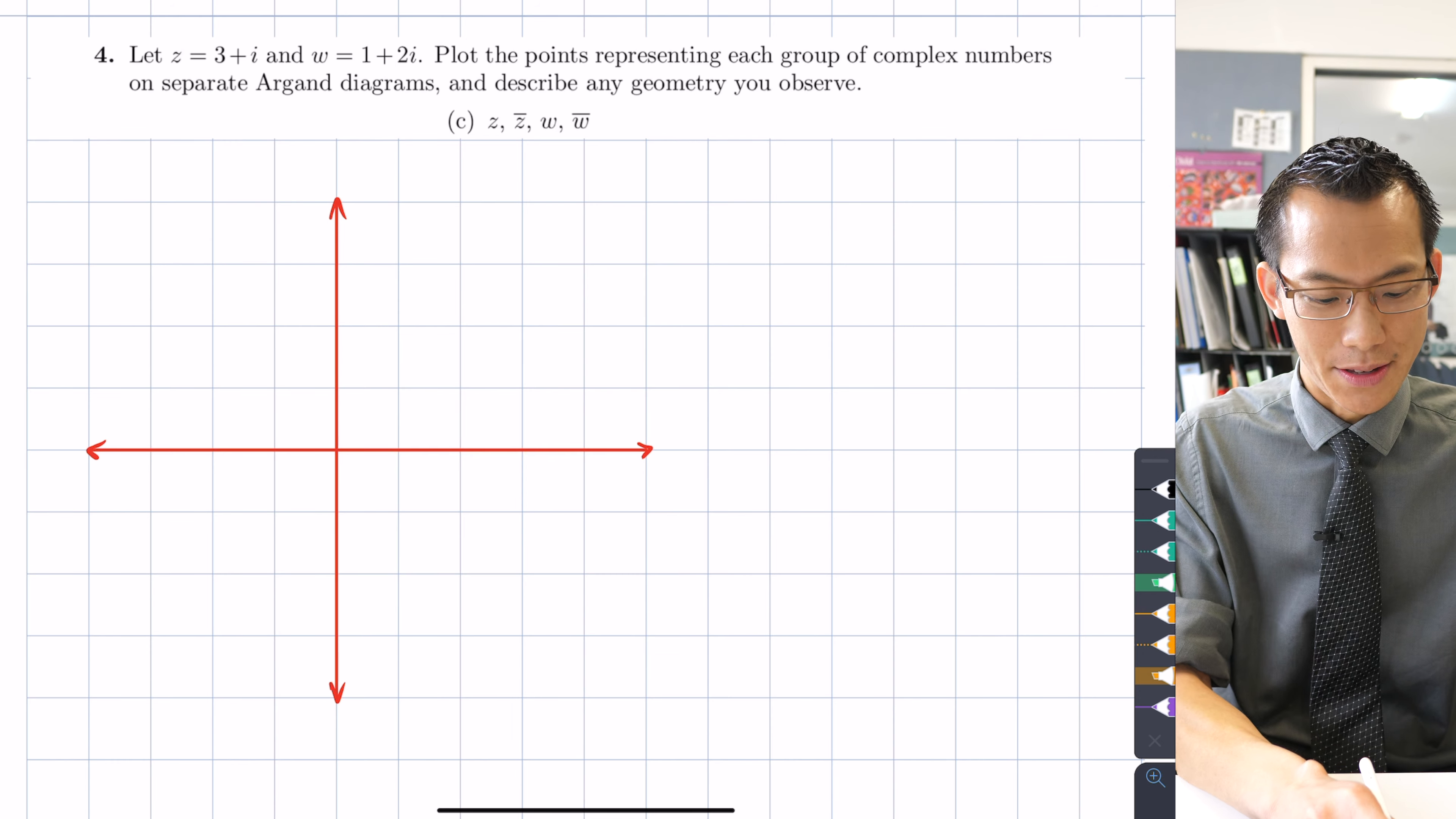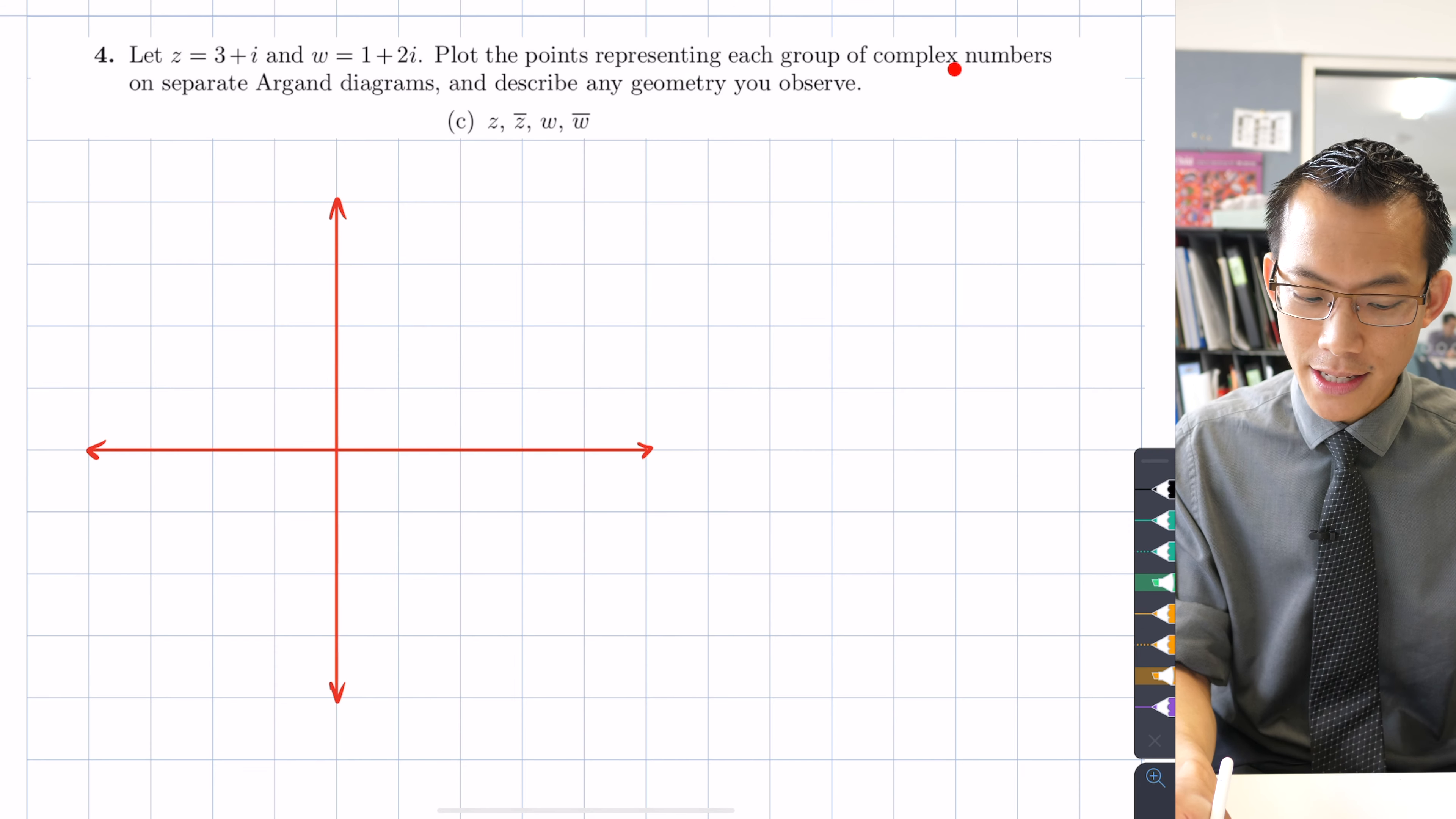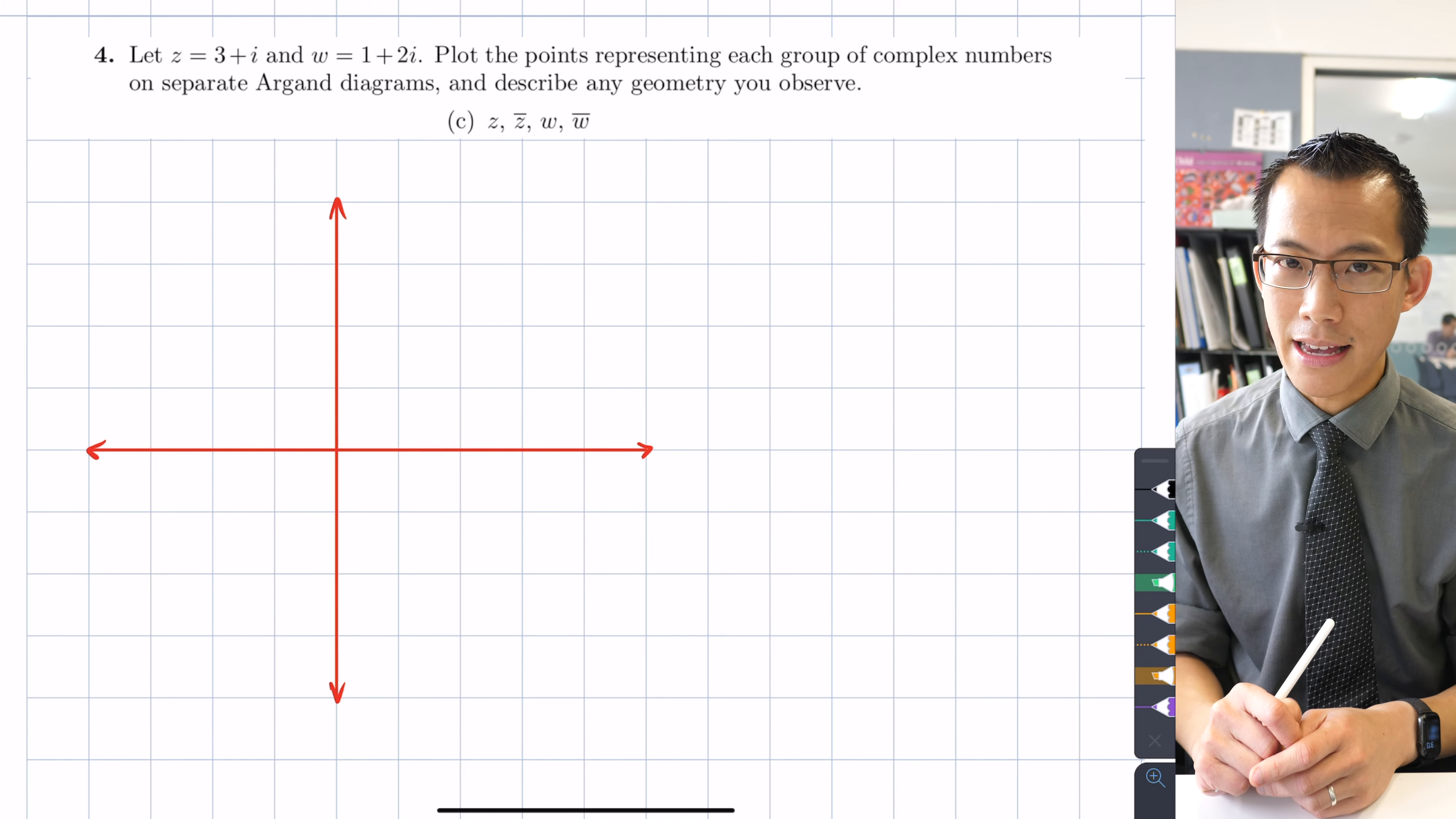They give us a pair of complex numbers, z which is 3 + i and w which is 1 + 2i. The first thing I want us to do is to plot the points representing these complex numbers onto some Argand diagrams. I've got a couple of the particular sub-questions from this one picked out for us to do.